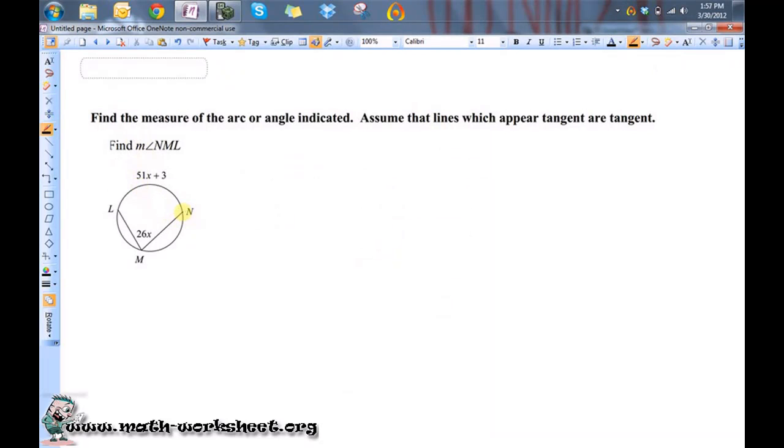We want to find the measure of angle NML. Whenever you have an inscribed angle like this, and you can tell it's inscribed because all of the points are on the circle, its measure is equal to one half the arc that is created by it.